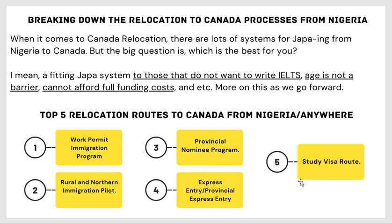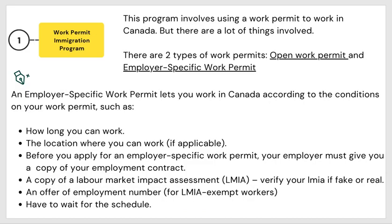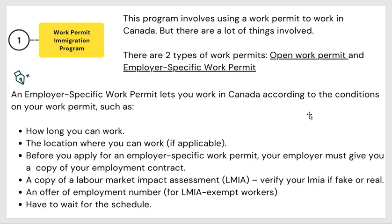Let's start with the work permit immigration program. This program involves using a work permit to get to Canada. The process is very involved and tiring. There are two types of work permits: the open work permit and the employer-specific work permit. The employer-specific work permit lets you work in Canada only if you fulfill the conditions of the work permit immigration program.